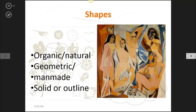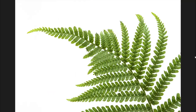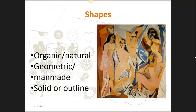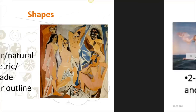The next element we're going to look at is shape. Ask yourself questions such as, is the shape organic and natural? Or is it geometric and man-made? Is it a solid shape? Is it outlined? Think about these things. For example, when you look at this work by Picasso, are these the natural shapes that you expect to see in women? Or has he created unusual shapes in his compositions?